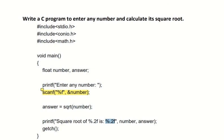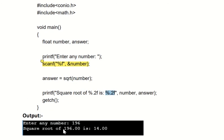The sample output is: enter any number, for example 196, and the answer is square root of 196.00 is: 14.00. Thank you all.